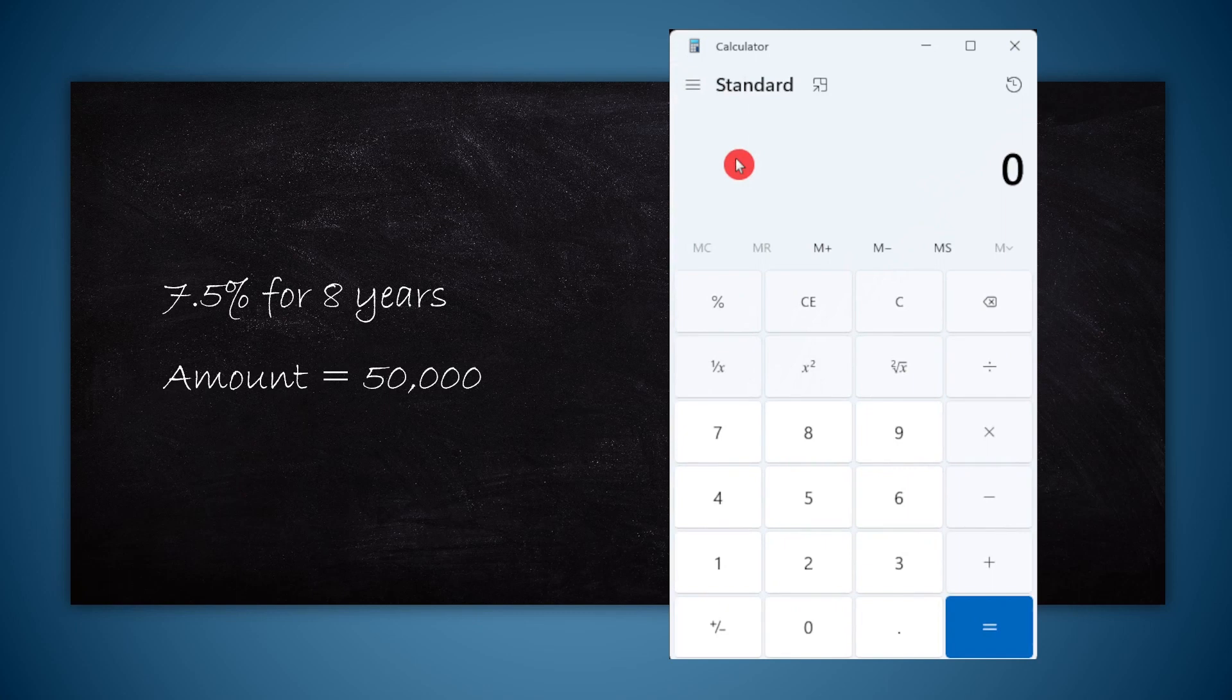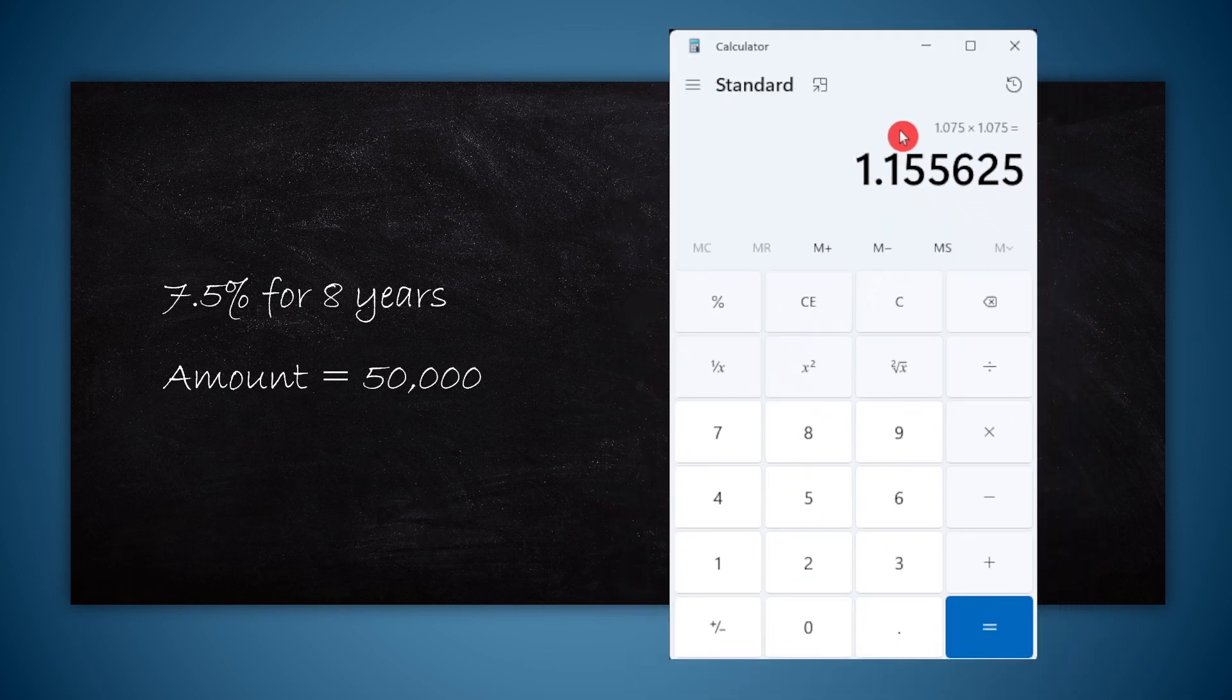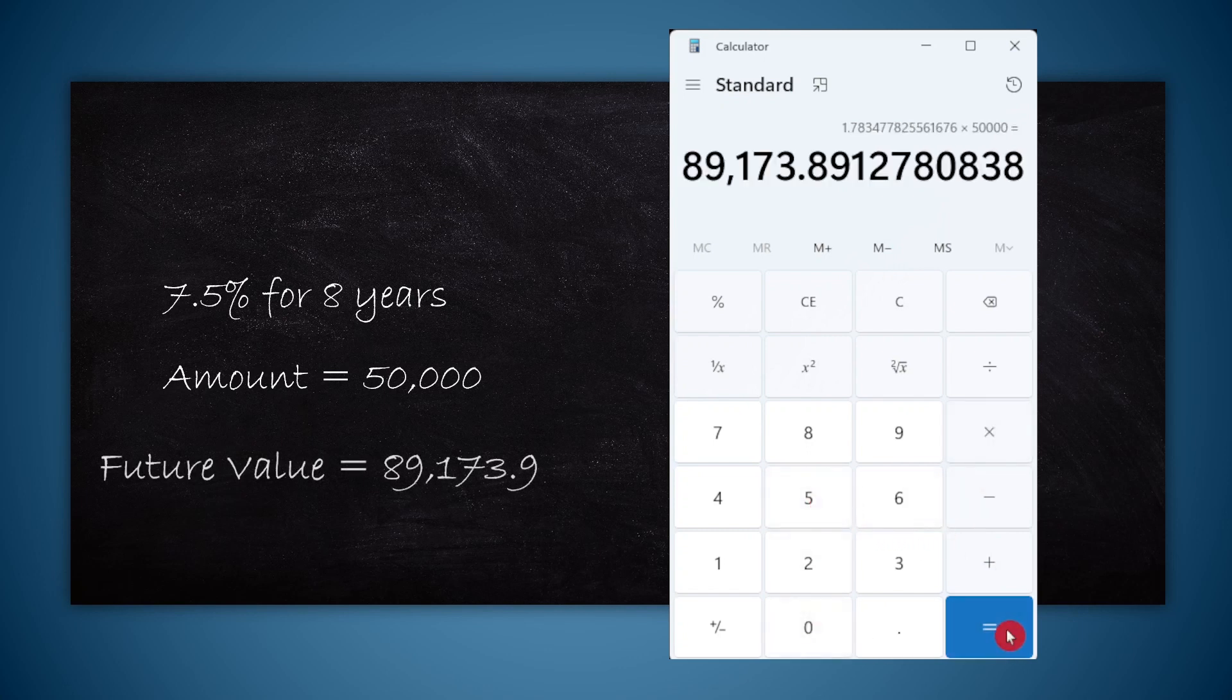But if you only have a standard calculator, like most of the handheld calculators, you don't have the power button. You can then type 1.075 into equal to. When you do into equal to, it will multiply with itself, you get square. You hit equal to again without pressing anything else, you will get cube. So you can press again once more to get to the power 4, 5, 6, 7, 8. And now you have the answer for 1.075 to the power 8. Again multiply with 50,000, which is the investment, and you have the future value with compound growth for 8 years.